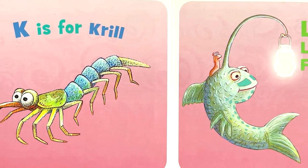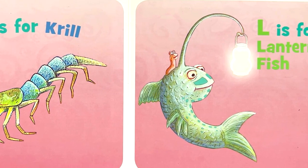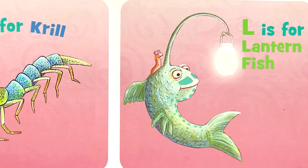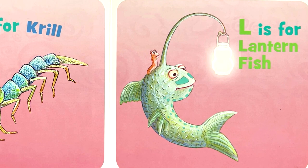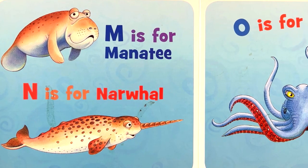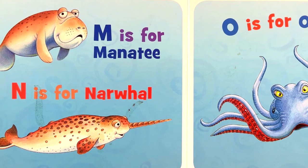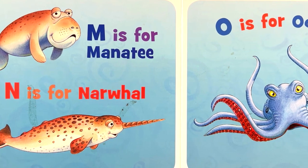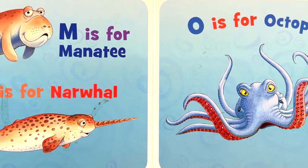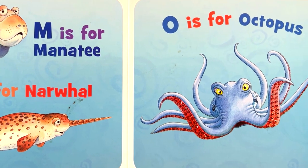K is for Krill. L is for Lantern Fish. M is for Manatee. N is for Narwhal. O is for Octopus.